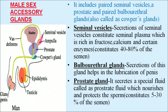Male sex accessory glands include paired seminal vesicles, a prostate gland, and paired bulbourethral glands, also called Cowper's glands. Secretions of seminal vesicles constitute seminal plasma, which is rich in fructose, calcium, and certain enzymes, and constitutes 40 to 80 percent of the semen. Secretion of the bulbourethral gland helps in lubrication of the penis. The prostate gland secretes prostatic fluid, which nourishes and protects the sperm, and constitutes 5 to 30 percent of the semen.